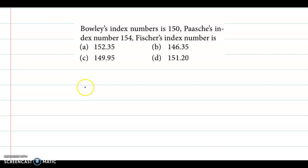Hello and welcome back. Now we discuss the example from index numbers. Question is, Bowley's index number is 150, Paasche's index number is 154. Then Fisher's index number is.